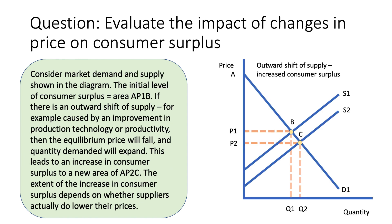We'll consider the market demand and supply curve in the diagram on the right-hand side. The initial level of consumer surplus is the area underneath the demand curve and above the market price — initially area A, P1, B. The market price is P1 and the quantity is Q1. Now, if there's an outward shift of supply, for example caused by better production technologies or improvements in productivity, then the